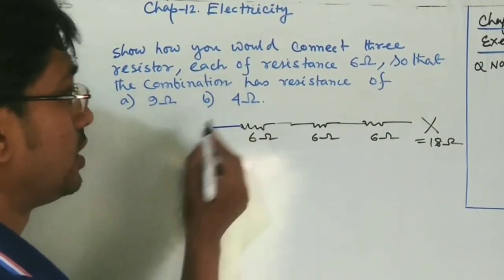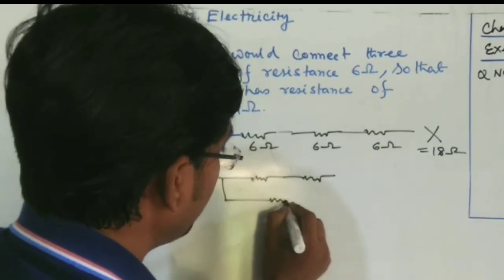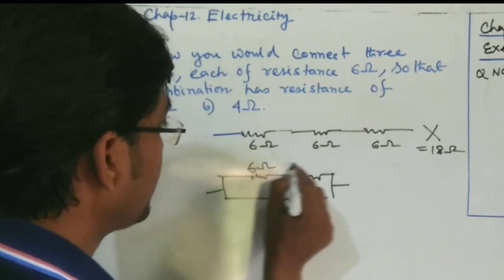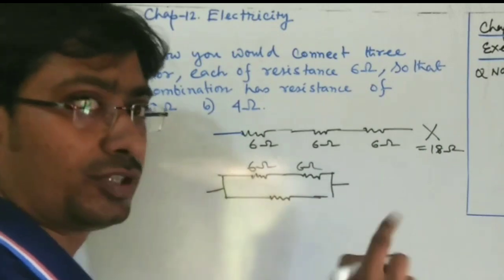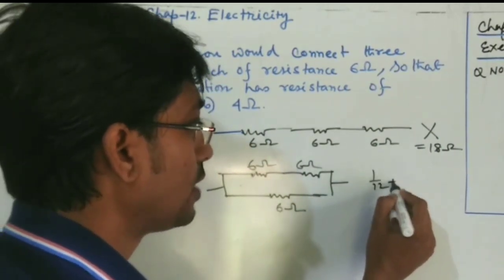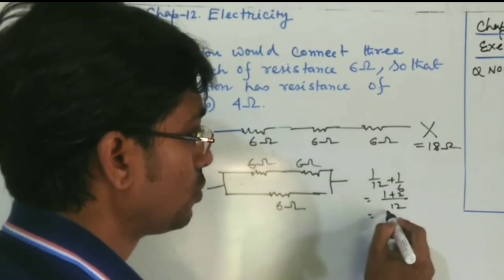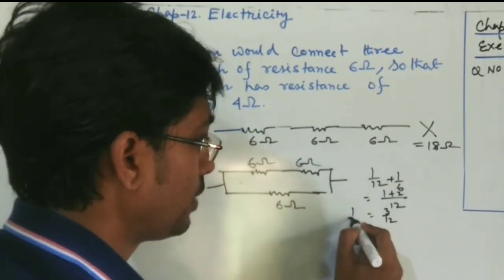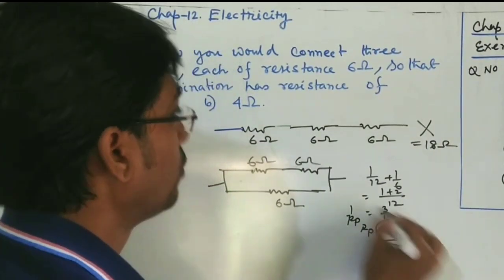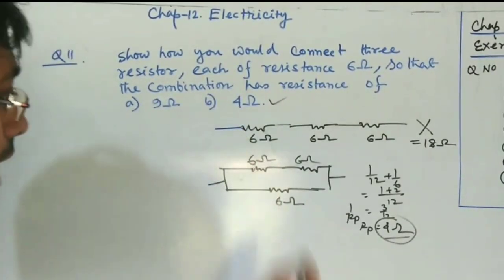For the mixed combination: take two resistors in series and the third in parallel with them. The two in series give 6 + 6 = 12 ohm. Then 1/Rp = 1/12 + 1/6 = 3/12, so Rp = 4 ohm. One answer is 4 ohm, so this combination is valid.